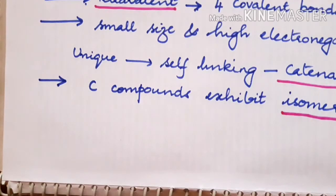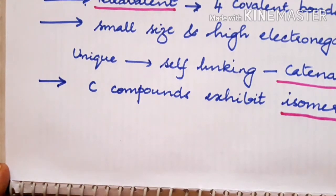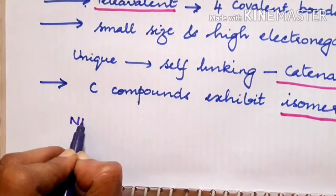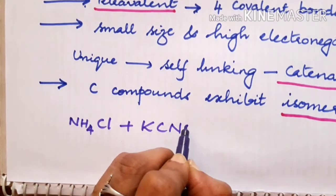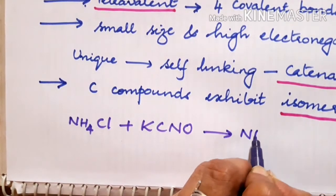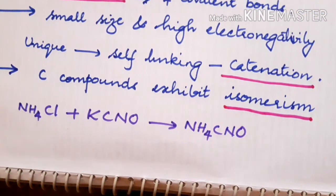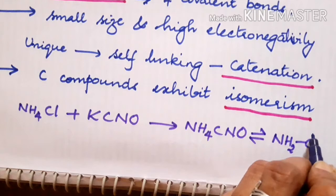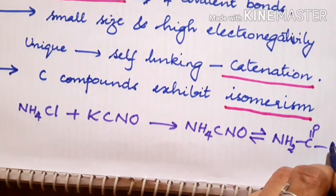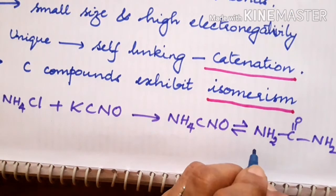The first synthetic compound that was produced in the lab was prepared by Wohler by treating ammonium chloride and potassium cyanate, leading to the formation of ammonium cyanate which undergoes rearrangement to form NH2-CO-NH2. This compound is known as urea.